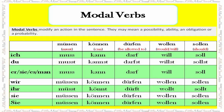'Wollen' means 'want' or 'will'. Its conjugations are: will, willst, will, wollen, wollt, wollen, wollen.